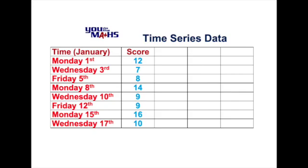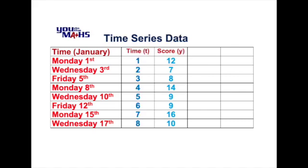To make data analysis easier, what we'll do is refer to both of these columns purely in numerical form. So we'll change the time column to represent different time values starting at t equals 1 for Monday the 1st of January, then t equals 2 for Wednesday the 3rd of January, continuing all the way down to Wednesday the 17th of January which we'll call t equals 8. So now we have two values which are purely numerical, and that'll make analysis of the data easier in terms of things like predictions.